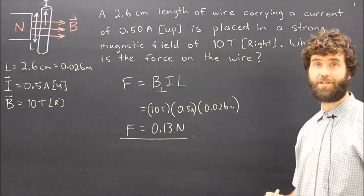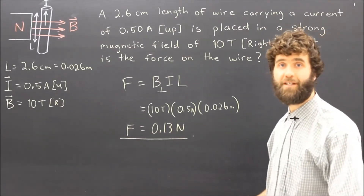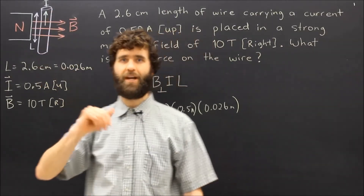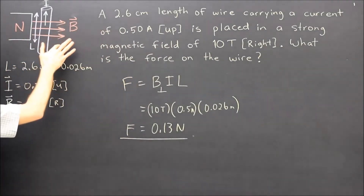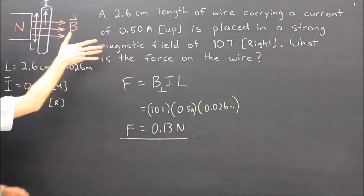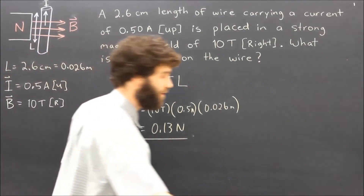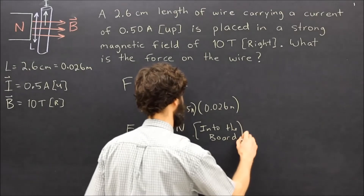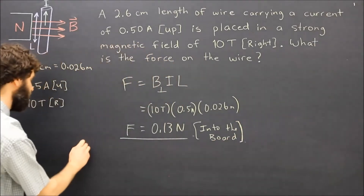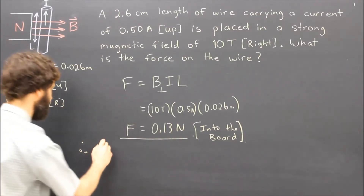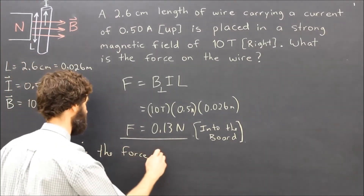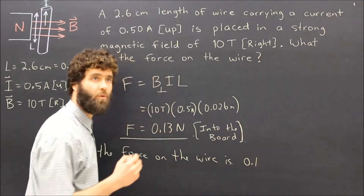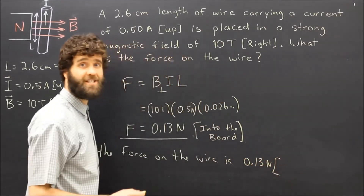Now we want to determine the direction of that force, so we need to use right-hand rule number three. With the given current I — that would be the conventional current going up — we use our right-hand rule: current is going up, magnetic field is to the right, and the palm is pointed into the board. That means the direction of the force is into the board. So therefore, the force on the wire is 0.13 newtons and the direction is into the board.